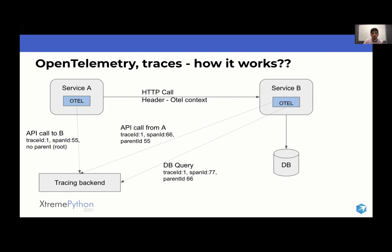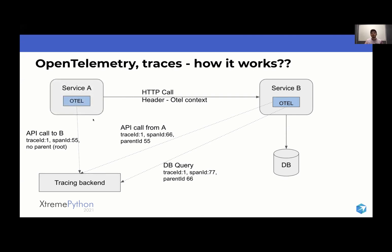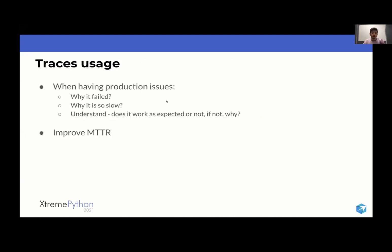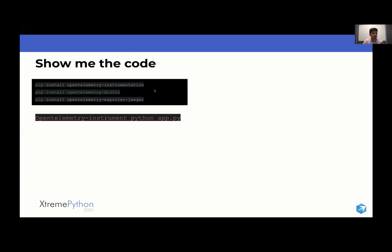A trace is a collection of different events called spans in OpenTelemetry — they all share an ID, and together they create a trace. In messaging systems or Lambda functions it works a bit differently. Traces help us understand why something failed, whether a system behaves as expected, and basically help us improve mean time to recover.